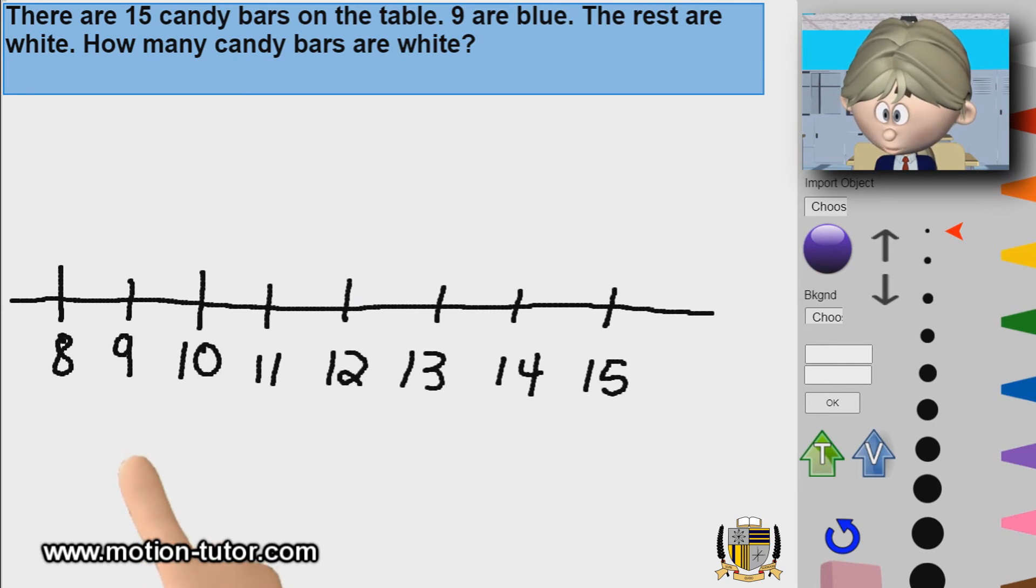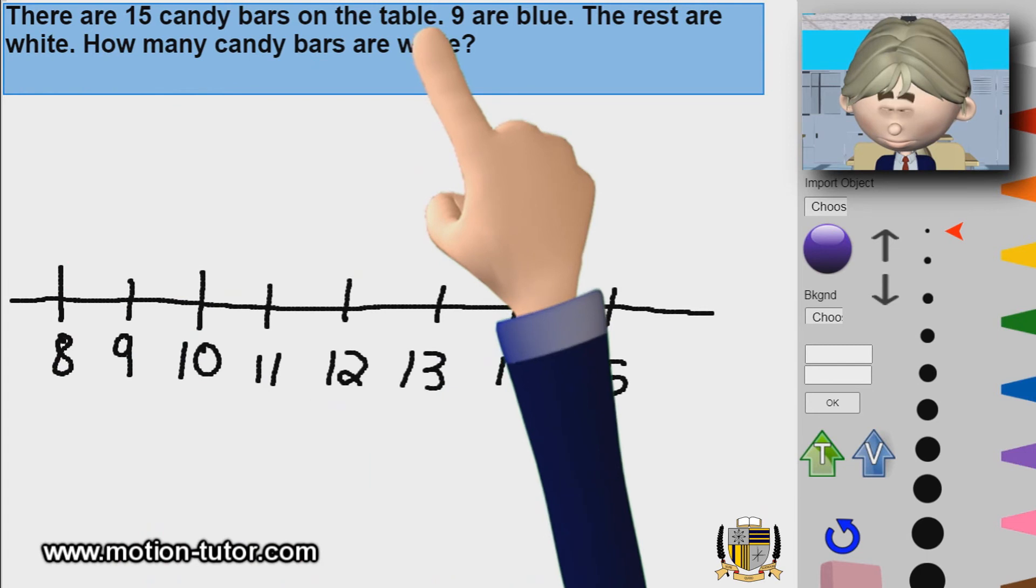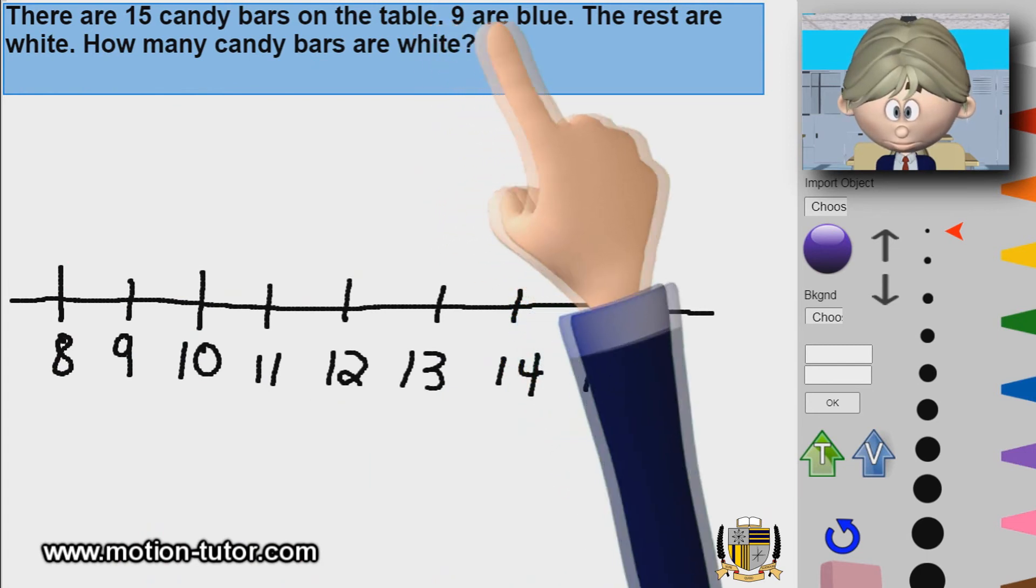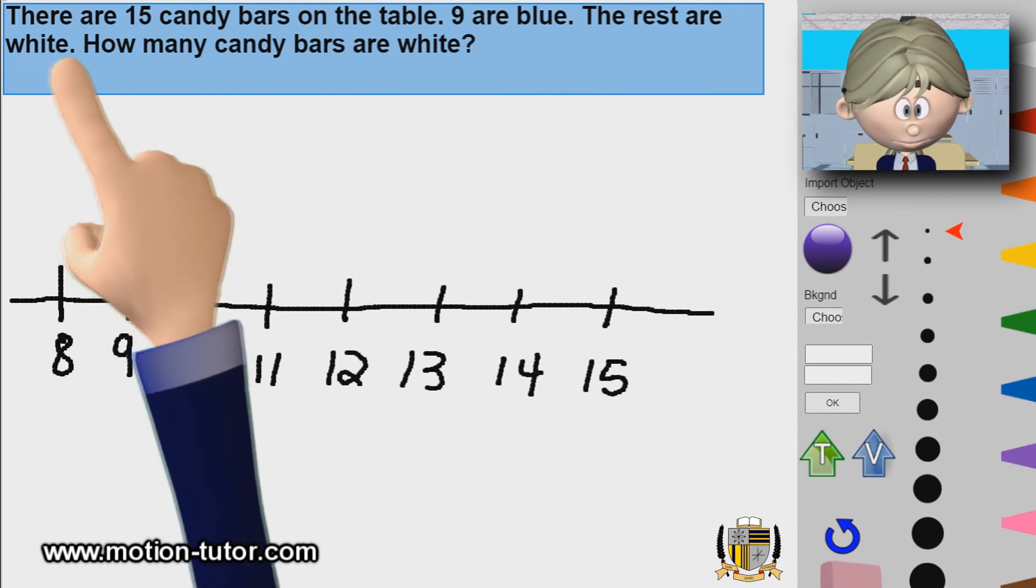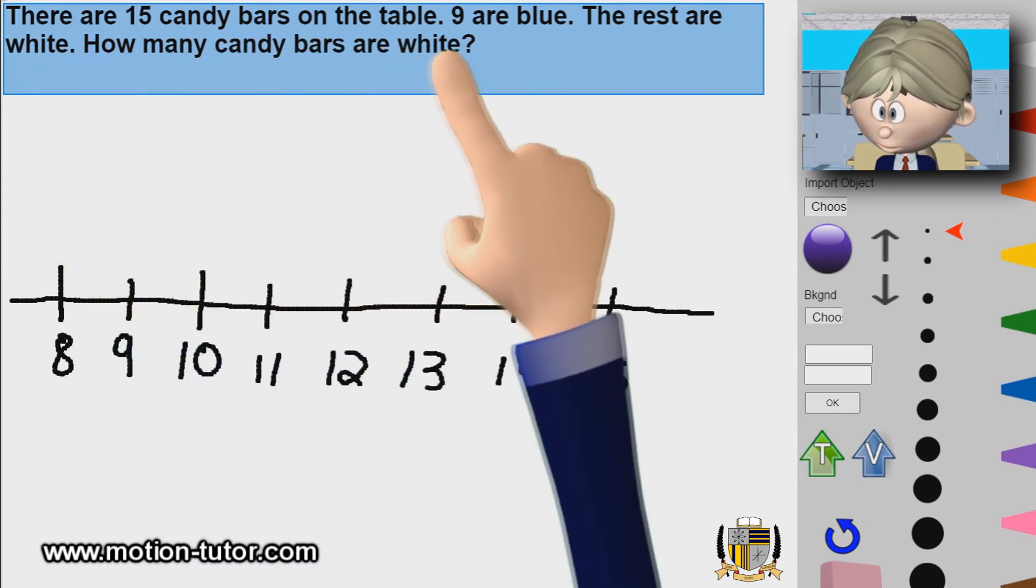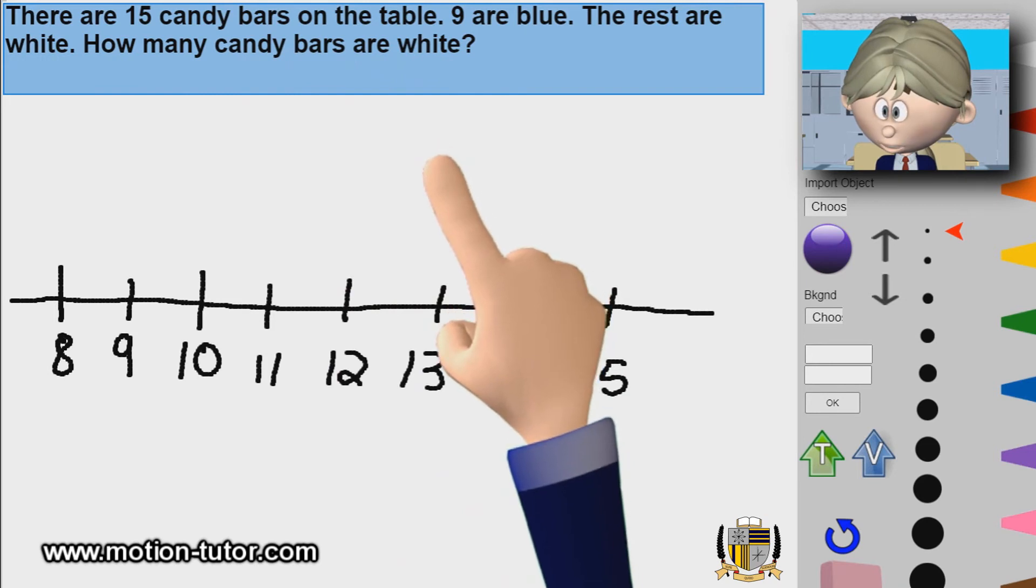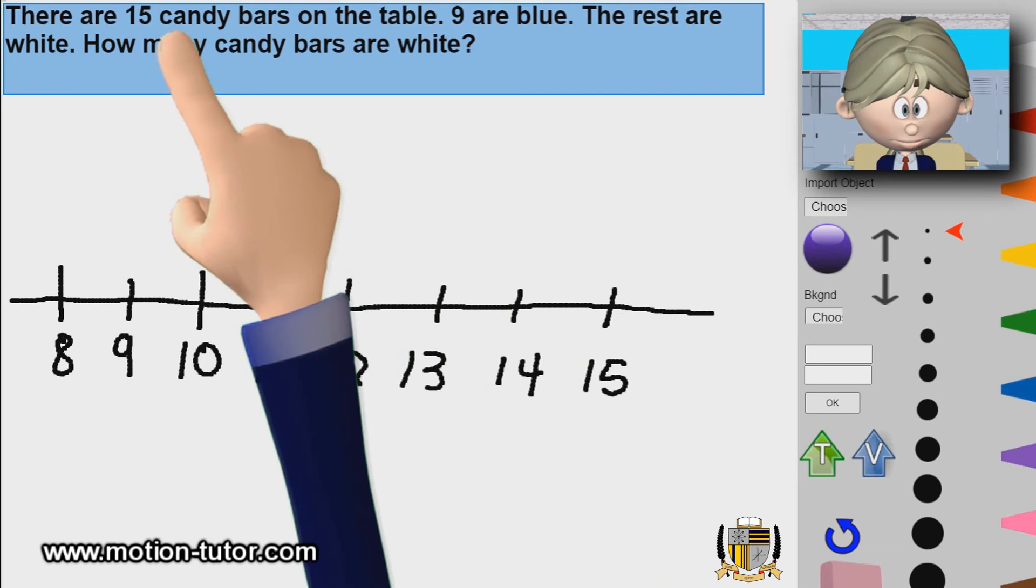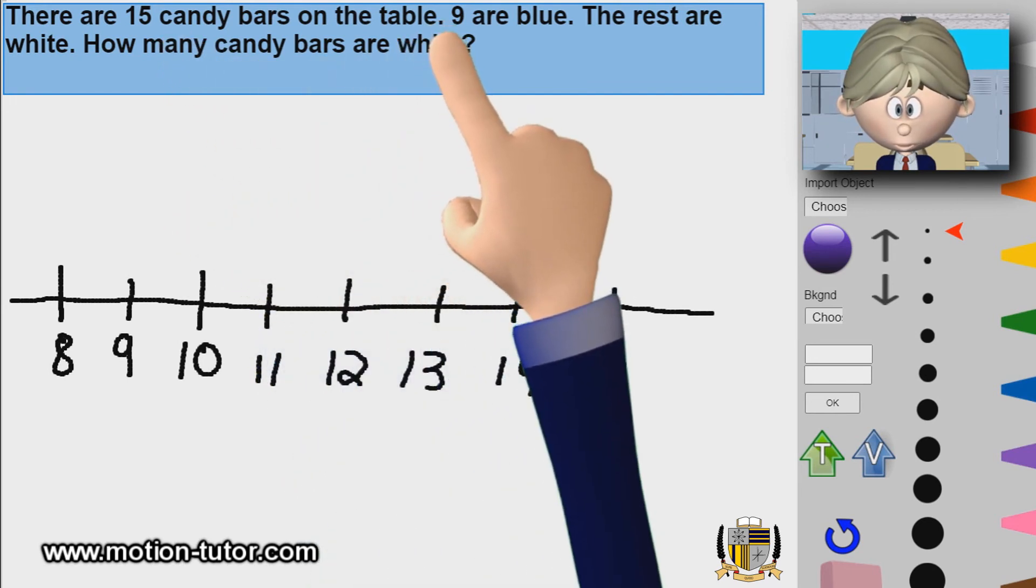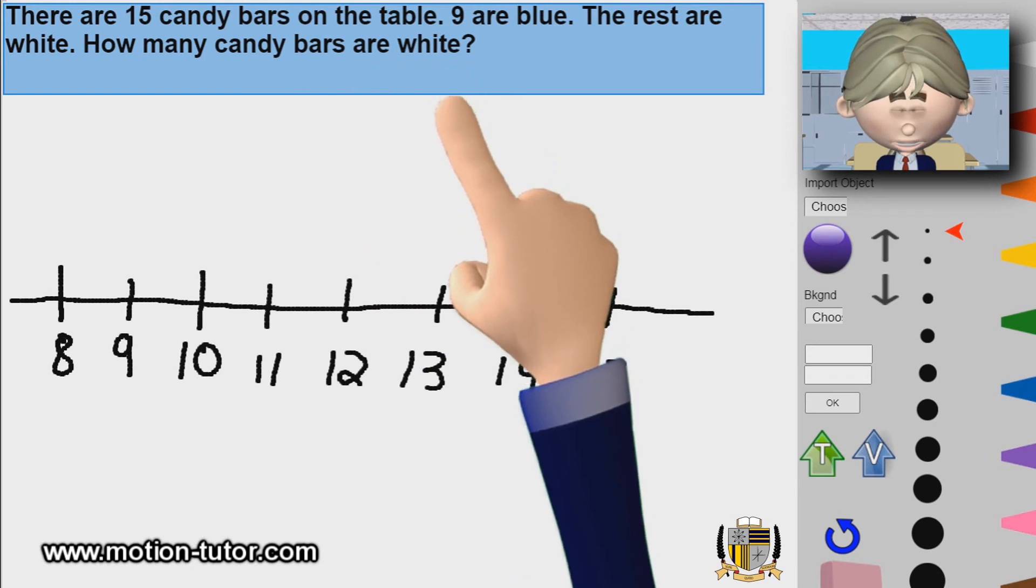I'll do one word problem real quick. There are 15 candy bars on the table. 9 are blue. The rest are white. How many candy bars are white? So there are 15 candy bars on the table, 9 are blue and the rest, that means the remaining are white. How many candy bars are white?